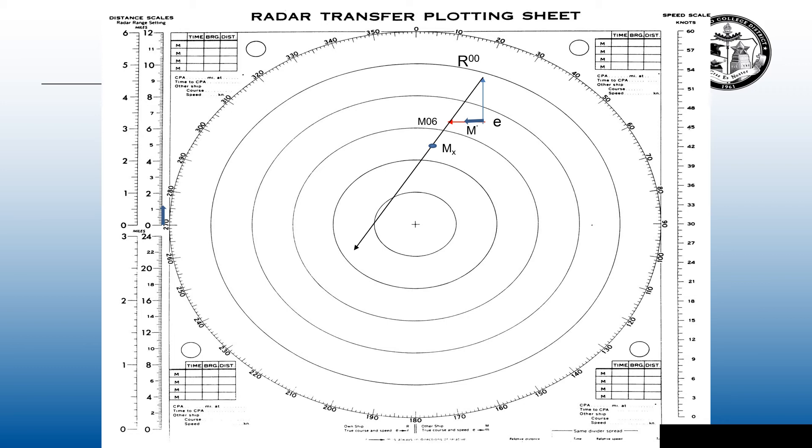The old relative motion was R00 to M06. The new relative motion line is going to be from R00 to M prime. Then if I parallel that down to MX, them slowing down to 12 knots will put them even closer to me. This time just a little over one mile and their bearing is going to be 300.